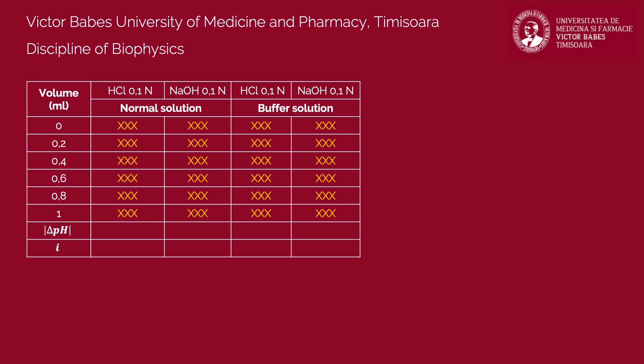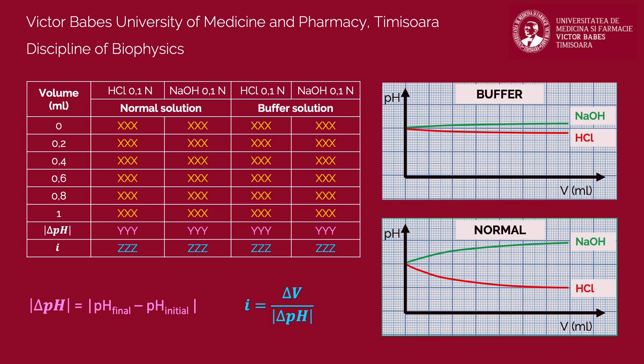Calculate the pH variation for each of the four solutions using the given formula. Calculate the buffering capacity of each solution using the given formula. Finally, represent graphically the pH variation with the added volume of acid or base. Draw two plots — one for the buffer solution and another for the non-buffer one.